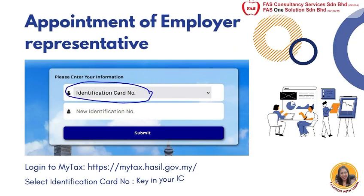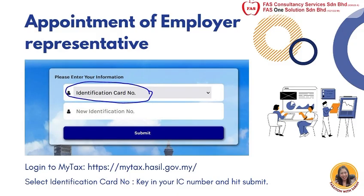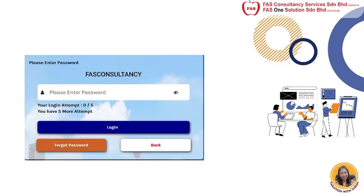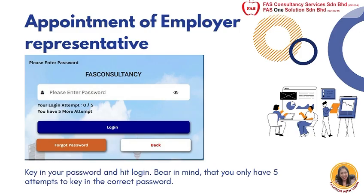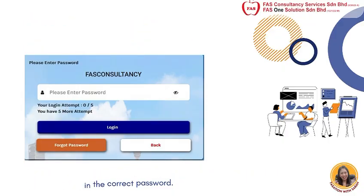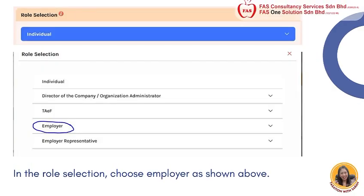Appointment of employer representative. First, login to MyTax at hddpsmytax.hassle.gov.my. Then select identification card number, key in your IC number and hit submit. Key in your password and hit login. Bear in mind that you only have 5 attempts to key in the correct password. In the role selection, choose employer as shown above.